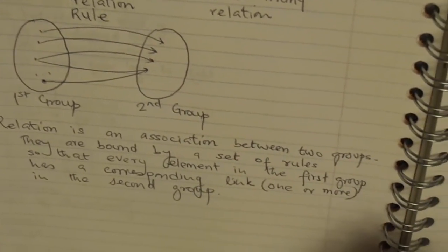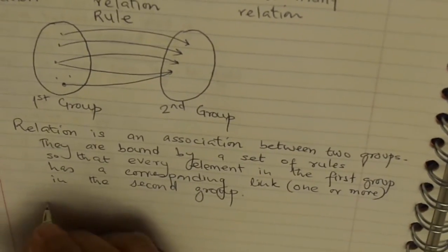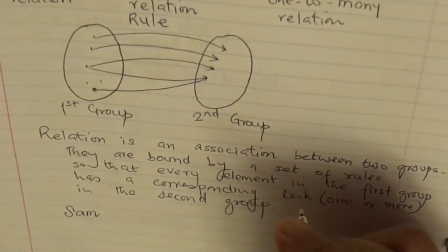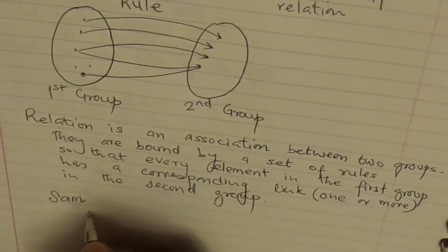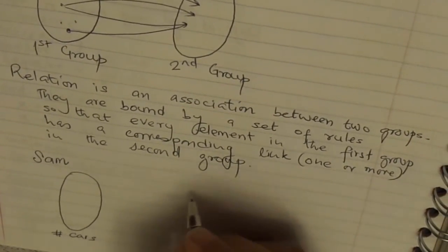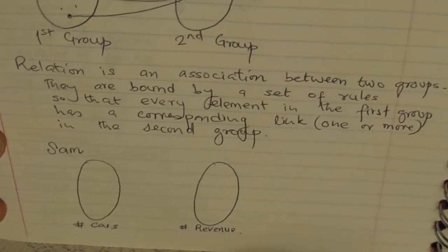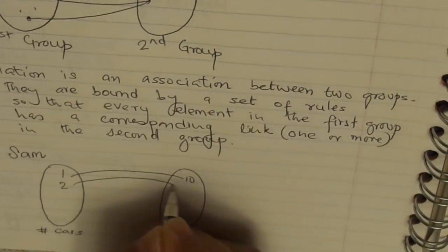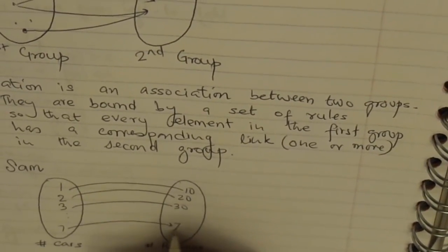As you know, mathematicians are fond of numbers, and we love extra cash. Here is Sam — Sam decides to do some extra earning this summer by car wash, and he expects to get $10 for every car wash. Let us say this group represents number of cars, and this group represents revenue. If Sam does one car wash, he gets $10; for 2, $20; for 3, $30; for 7, $70.